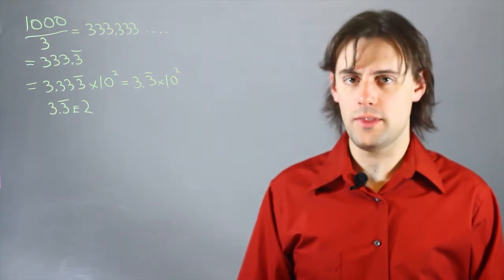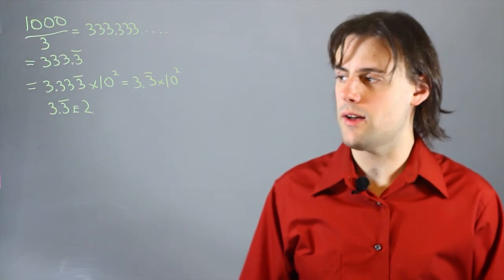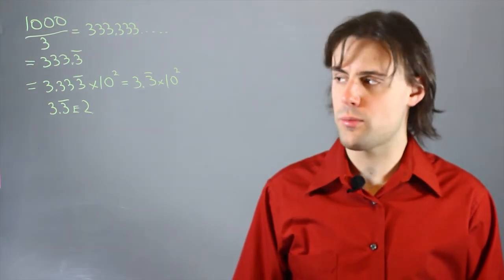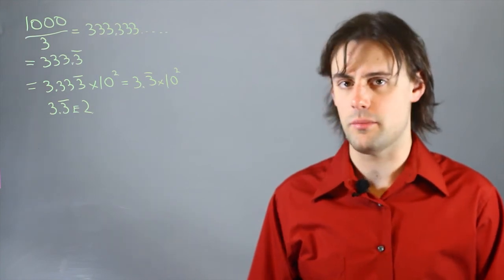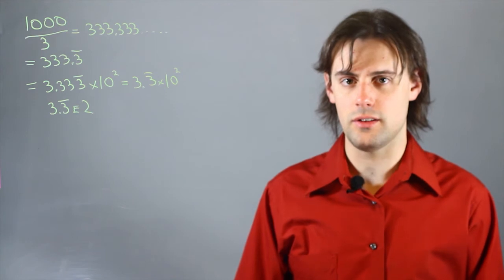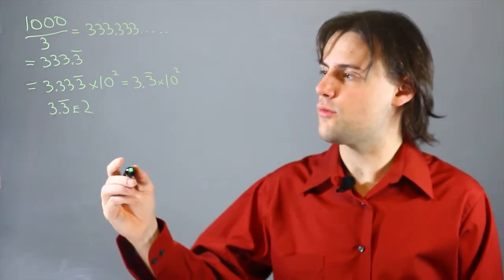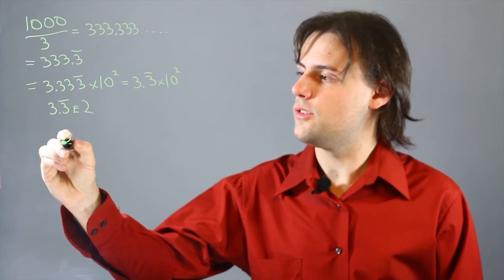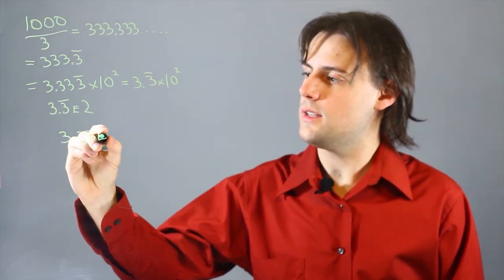If we wanted to write this without using the repetend bar, then we would have to decide what an appropriate number of significant figures, or sig figs, should be for this number. Normally, 3 to 4 sig figs is sufficient for most calculations. So, if I use 3 sig figs, I'll simply write 3.33, e2.